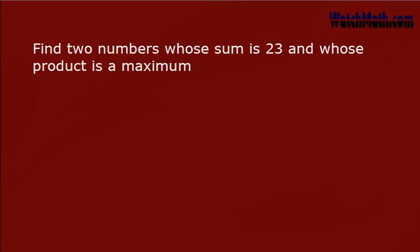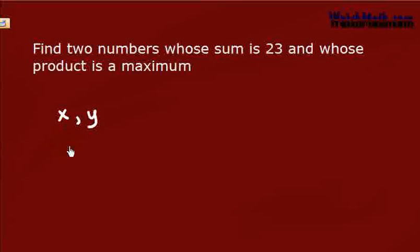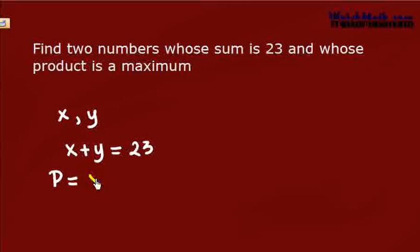Find two numbers whose sum is 23 and whose product is the maximum. Since we don't know what those two numbers are, let us denote the first number as x and the second as y. We are given that the sum of the two is 23, so x plus y equals 23. And we want to maximize the product, so let us say the product of the two is x times y.